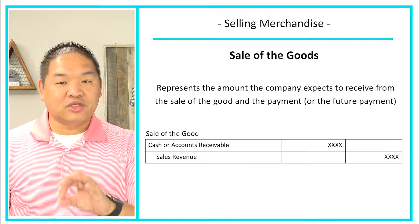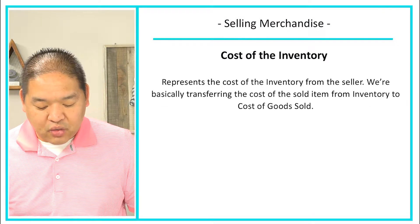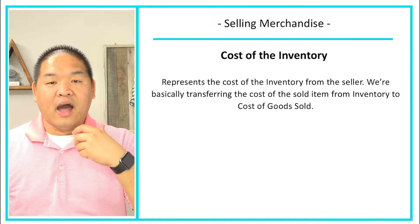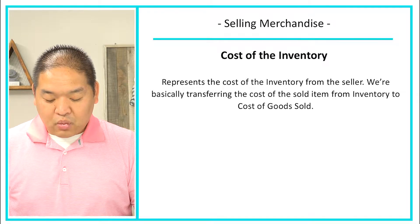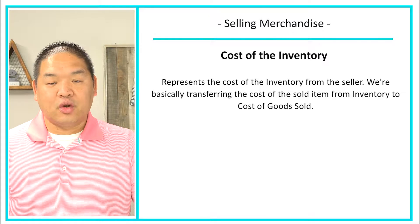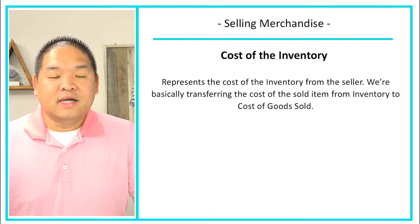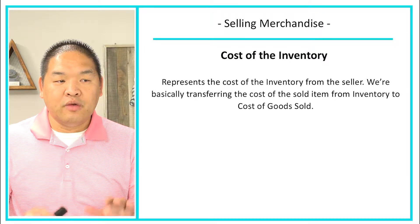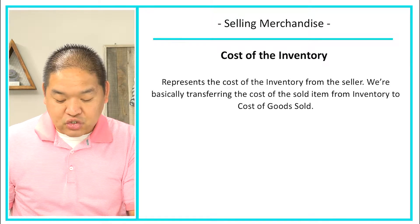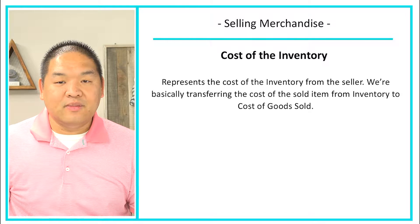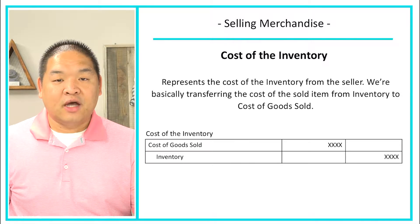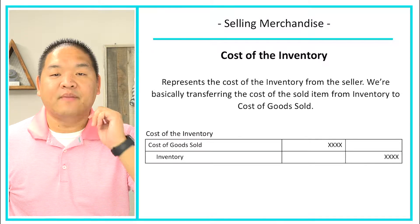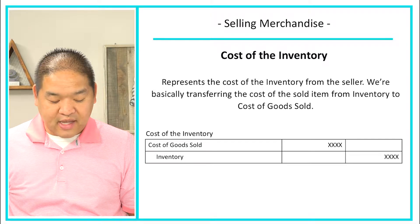Now we get to the cost of the merchandise. The cost of the inventory represents the cost of the inventory to the seller — how much did that inventory cost us initially? We're basically transferring the cost of the goods sold from inventory to cost of goods sold. We debit the expense cost of goods sold, and then we credit inventory, reducing inventory by the amount we actually sold at its original cost.